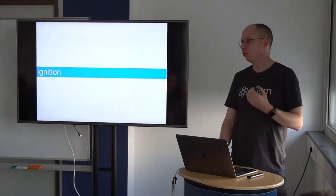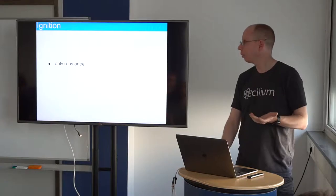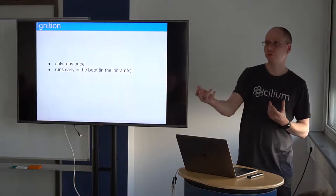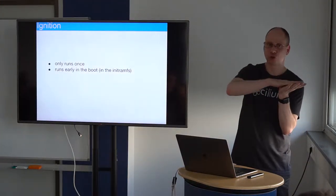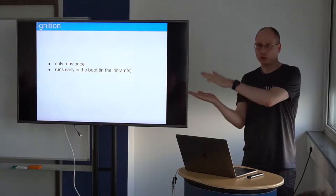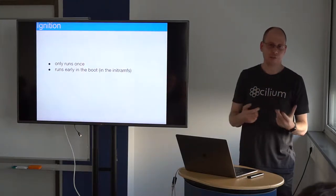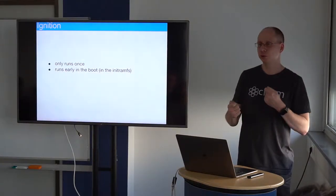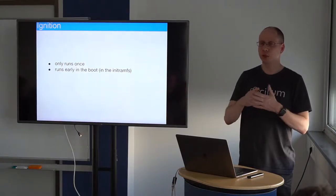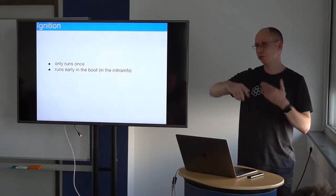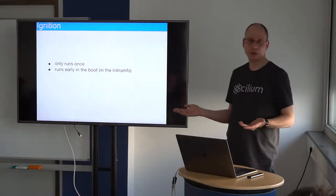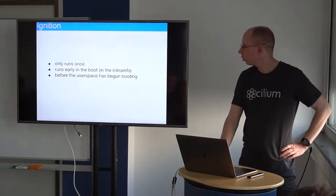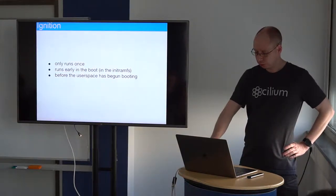Ignition is the daemon — a systemd unit — that only runs once at boot, very early in the boot process, when the init RAM FS is started before the root filesystem is mounted. This means you can manipulate every disk: format them, repartition them, put LVM on top. This was the biggest problem with cloud-init, which ran after the root process was done. Ignition pulls its configuration from a source of truth — in our case, the Matchbox server.